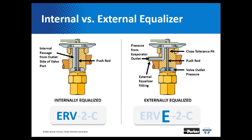Following the refrigerant code we have the internal versus external equalizer. In this example we have two different valves of the same family. The first is an ERVE-2-C: after the ER body type we have the V refrigerant code — V is for R-22 — and since there is nothing after this V, we know this is an internally equalized expansion valve. On the right by comparison, we have an ERV with an E present, indicating it is externally equalized. You can physically see this on the expansion valve: you'll have an inlet port, an outlet port, and a third port which is the external equalizer.